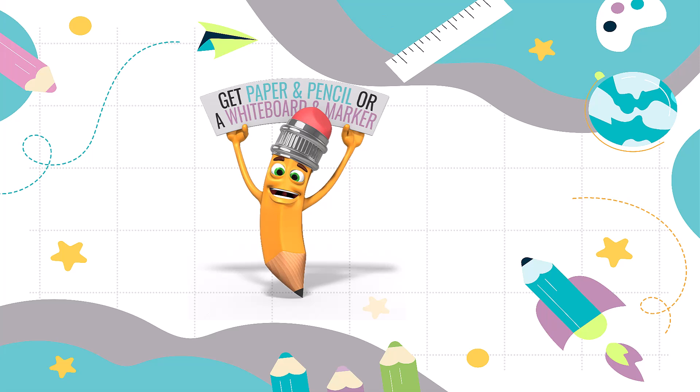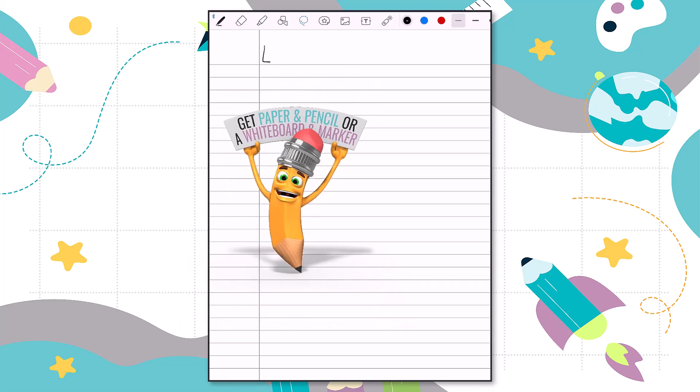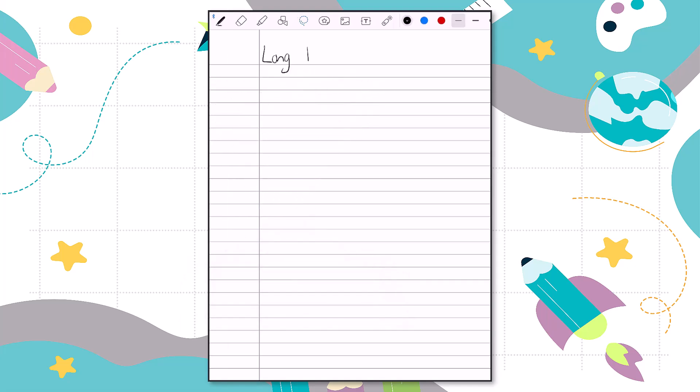Make sure you have a paper and pencil or a whiteboard and a dry erase marker. Today we're going to practice some long division. We're going to use one digit divisors and mostly three digit dividends.